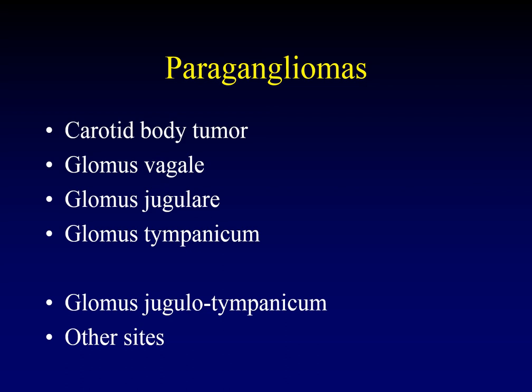The four locations are carotid body tumors, glomus vagali tumors, glomus jugulari tumors, and glomus tympanicum tumors. Sometimes people talk about glomus jugulotympanicum tumors — that is really a glomus jugulari tumor that has grown so large it's visible within the tympanic cavity, essentially the inevitable result of an untreated glomus jugulari tumor. Other sites include the larynx, but even those are not common. It's really those top four.